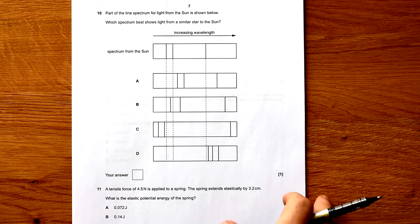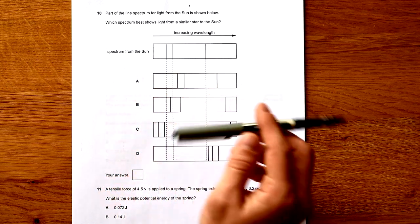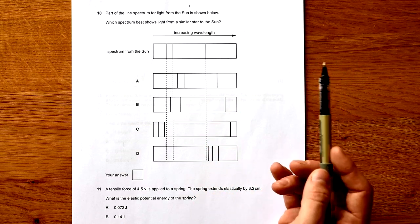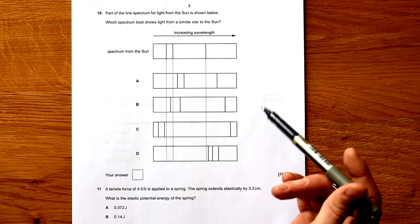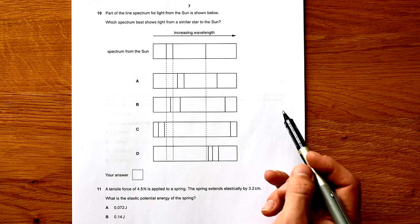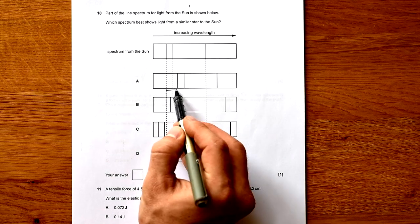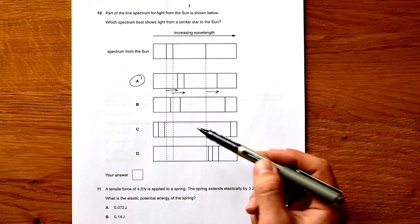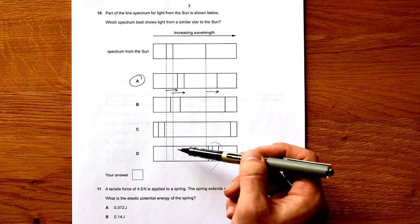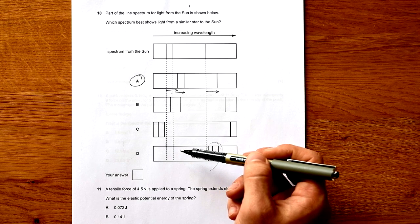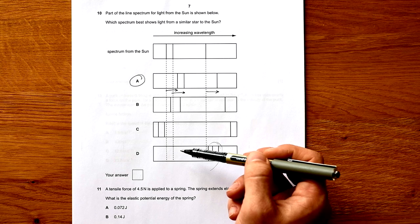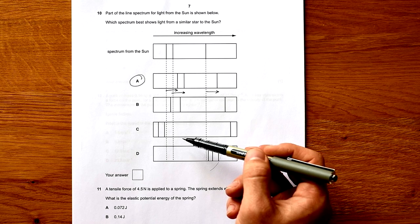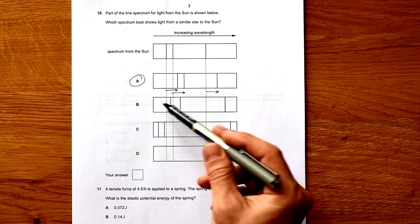Question 10: Part of the line spectrum for light from the sun is shown. Which spectrum best shows light from a similar star to the sun? We know that if a star is further away, which they all have to be, it means they are generally red shifted. So the wavelengths should have increased a similar proportion. Have a look: this wavelength has moved this far, this one this far, this one this far. They've all red shifted pretty much the same amount. So it's going to be A. Now the mark scheme says B because technically the bigger the wavelength the bigger effect redshift has. However it should not be nearly as prominent as this. So even though the mark scheme says B I would say A. It's a bit mean putting both in here at the same time.